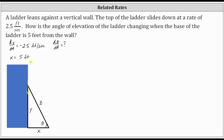There's one more important thing to notice: we don't have the length of the ladder, but Z is a constant because the length of the ladder is not going to change. Now we need to write an equation involving the angle theta. We do want to include the hypotenuse Z, because it's a constant, and we also want to include Y because we know dy/dt is negative 2.5 feet per second.